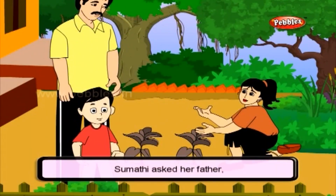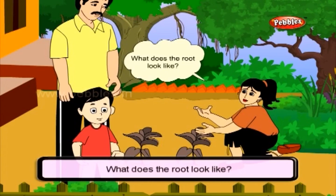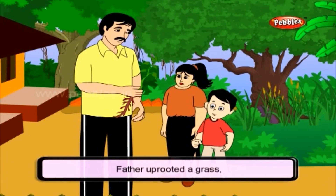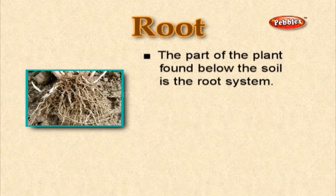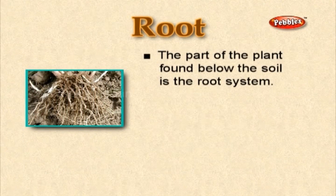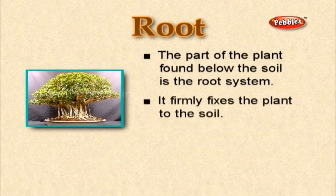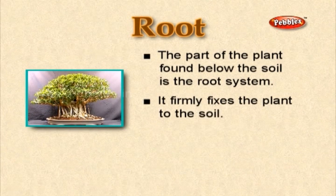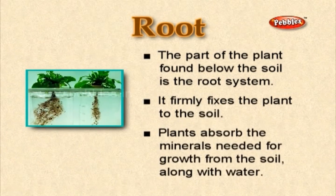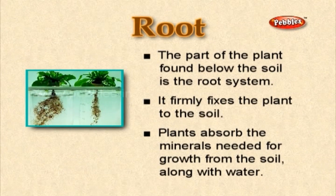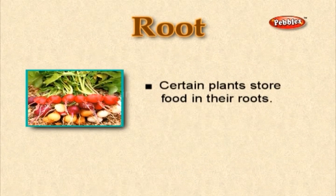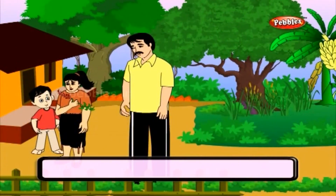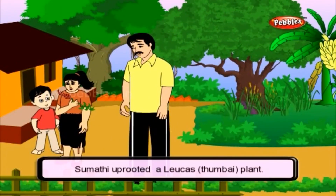Sumati asked her father, 'What does the root look like?' Father uprooted a grass and started describing it. The root of the plant is found below the soil — this is the root system. It firmly fixes the plant to the soil. Plants absorb the minerals needed for growth from the soil along with water. Certain plants store food in their roots. Sumati then uprooted a Tumbai plant.